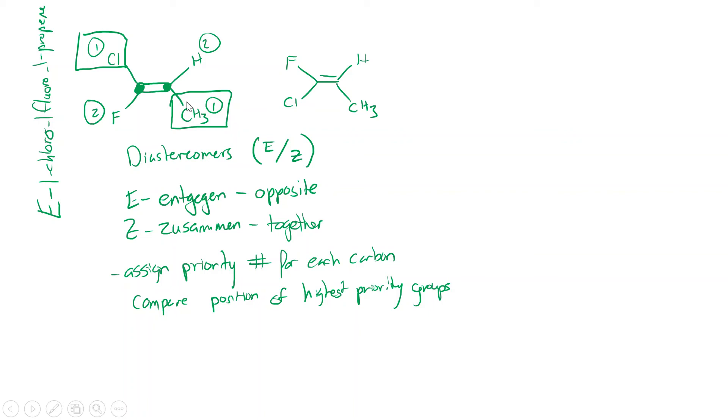1-chloro-1-fluoropropene tells me the parent chain is three carbons. There's an alkene in there. And the chlorine and the fluorine are attached to carbon one. E tells me that the chlorine is opposite the highest priority group on the other side, which is the methyl group. Now, of course, if this is a diastereomer, we would expect this to be Z-1-chloro-1-fluoropropene.